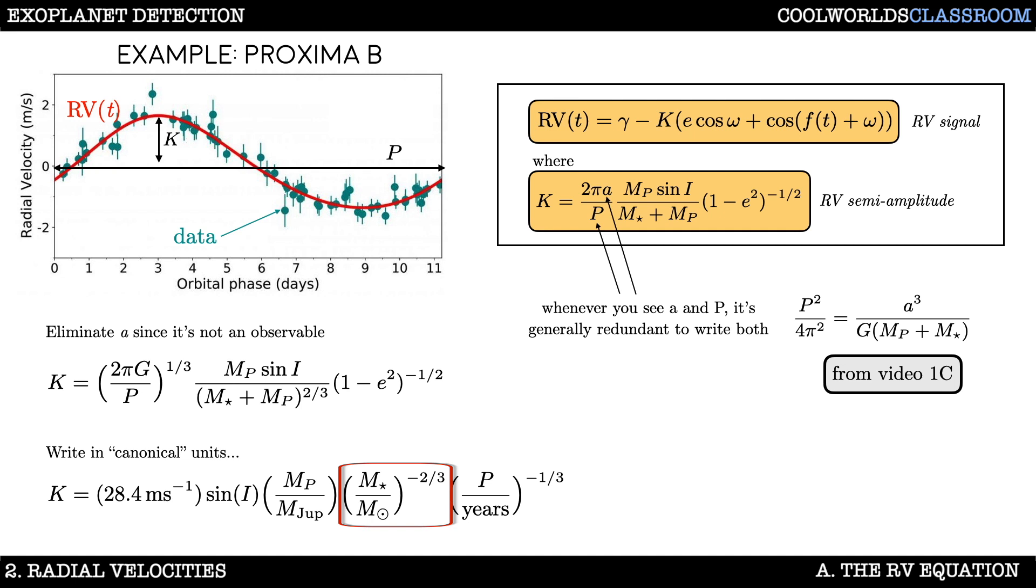Turning to M star we see an almost inverse relationship which means that lighter stars give bigger signals. Okay that makes sense because lighter stars are easier to wobble. And finally we find a linear scaling with respect to planet mass. That means that heavier planets wobble the star more and are thus easier to find.